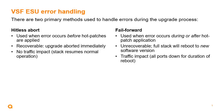The two methods used to handle errors are hitless abort, used for recoverable errors that occur before hot patches are applied — this returns the system to normal operation with no traffic impact — and fail forward, used for any error that occurs during or after hot patch application. Fail forward results in a full stack reboot to the new software version, with all ports and the stack down for the duration of that reboot.